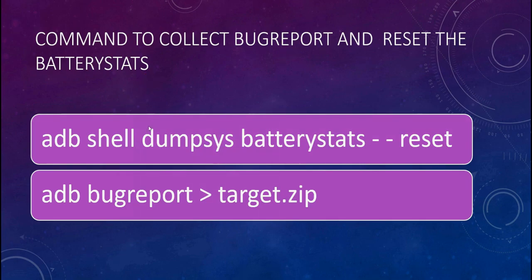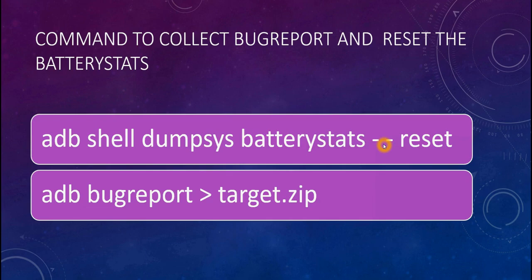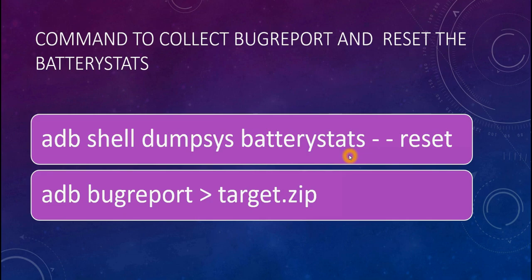The command to collect a bug report and reset battery stats: we want fresh collection, not previous battery stats information. To reset the battery-related information, connect your device via ADB shell and run: adb shell dumpsys batterystats -- reset. Note there is no space between the two hyphens — I added a space in the slide only to visually differentiate them. When running the command in your ADB prompt, do not add a space: it should be hyphen-hyphen reset. Once you run this reset command, all battery stats and battery dump information will be deleted, and a new fresh log collection will be available when you run adb bugreport.